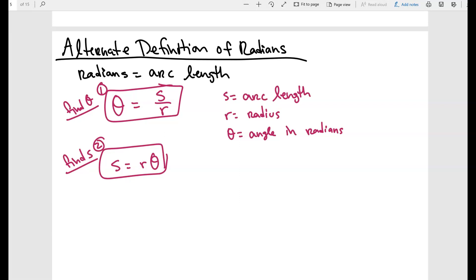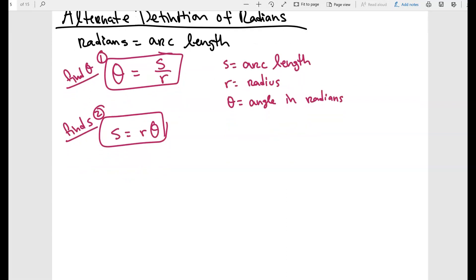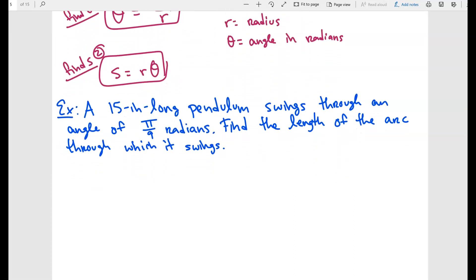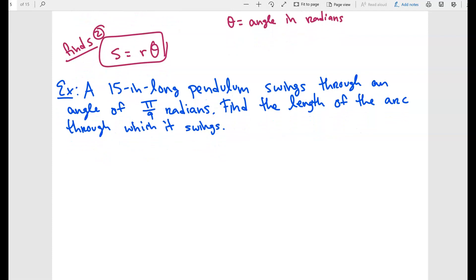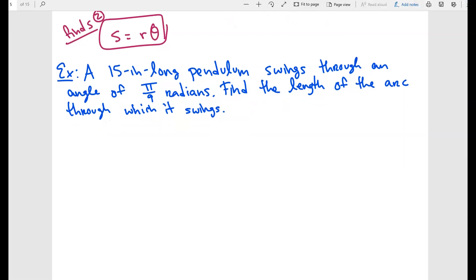So let's do a couple problems to understand how to do problems of this kind. We have a 15-inch pendulum that swings through an angle of π over 9 radians. Find the length of the arc through which it swings. So let's first start by drawing a picture.